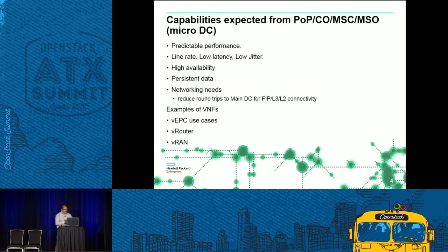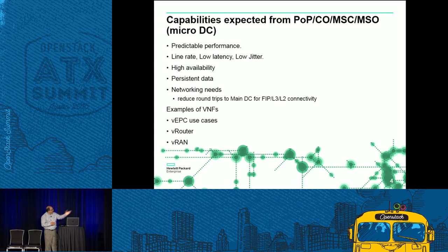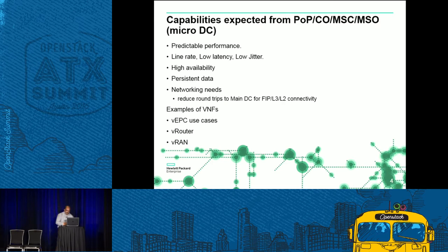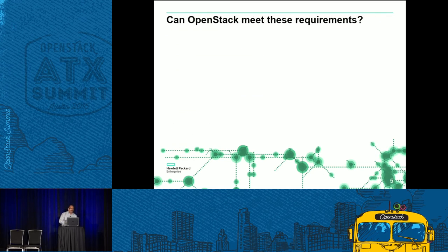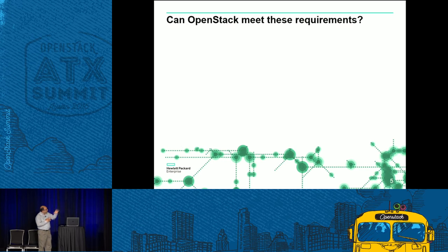In a multi-tier architecture, VNFs deployed in micro DCs should avoid round trips back to the main data center to satisfy networking needs like floating IP addresses and L3/L2 connectivity. Real-world telco use cases include vEPC, vRouter, and vRAN, among others. Now let's go over how OpenStack tries to meet these requirements, considering two different possible approaches.